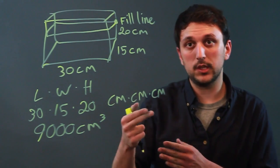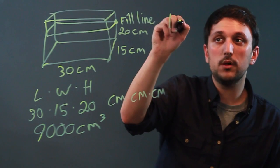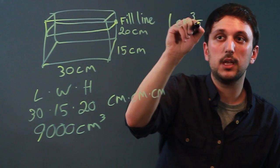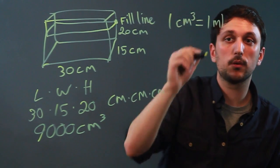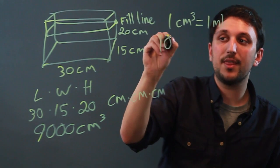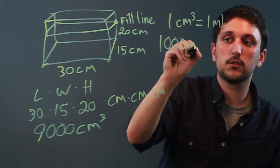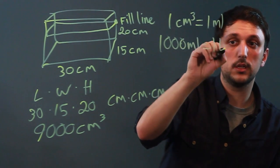Now how do we convert that into liters? Well, 1 centimeter cubed equals 1 milliliter. And 1,000 milliliters equals 1 liter.